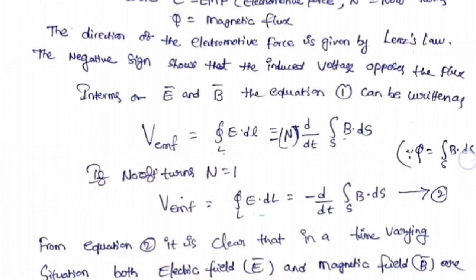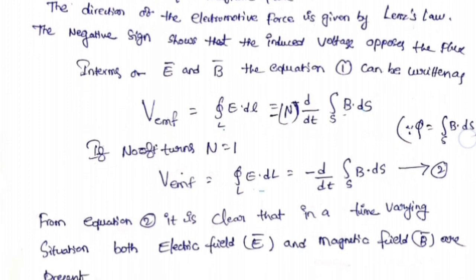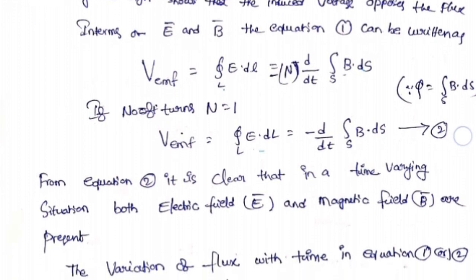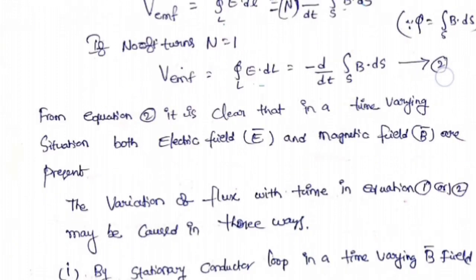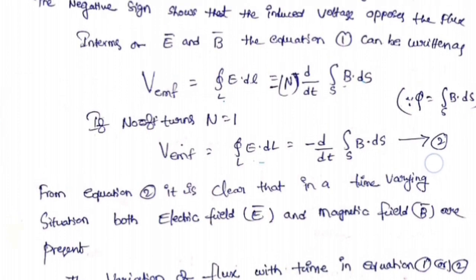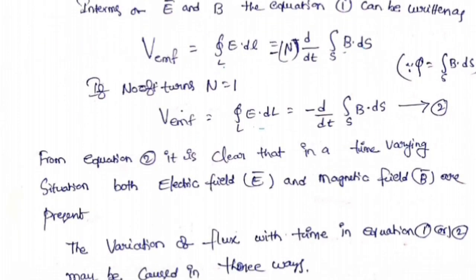From equation 2, it is clear that in a time varying situation, both electric field and magnetic fields are present. The variation of flux with time in equations 1 and 2 may be caused in three ways. Equation 1 is V_EMF = -N dφ/dt and equation 2 is ∮E·dL = -d/dt ∬B·dS.